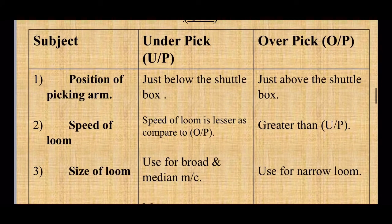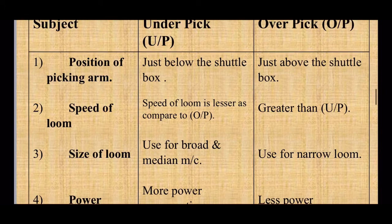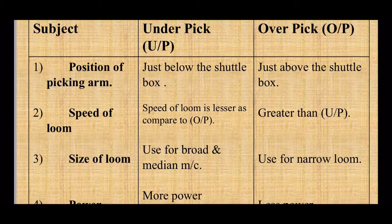We will compare overpick looms and underpick looms on the basis of a few points. The first point is the position of the picking arm. In underpick looms, the picking arm is positioned just below the shuttle box — because it is under the shuttle box, it is called underpick. In overpick, the picking arm is positioned just above the shuttle box, so it is called overpick mechanism.